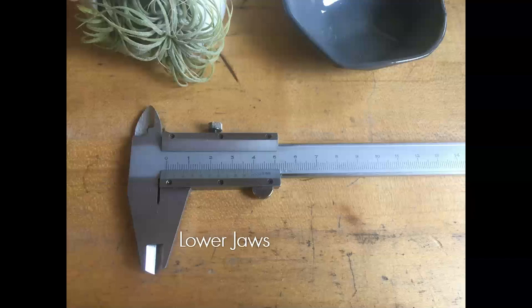On the top here, these are the upper jaws. When you open up the calipers, these jaws can measure the inside diameter of something, which is really handy when you want to measure the inside of a ring or the inside of a bezel to make sure that you've got your measurements right.